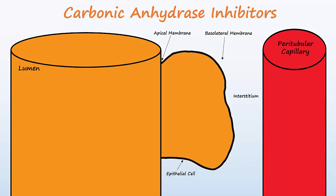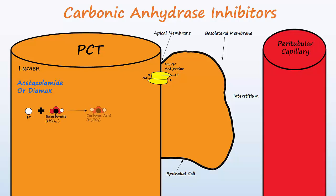Commonly used carbonic anhydrase inhibitors are acetazolamide, or Diamox. Carbonic anhydrase inhibitors exert their action mainly in the PCT, but also in the DCT. In the PCT, there are sodium-hydrogen exchangers in the apical membrane of the renal tubular cells that allow for sodium reabsorption. In the lumen, hydrogen ions and bicarbonate ions combine to form carbonic acid, which is then acted upon by an enzyme known as carbonic anhydrase.